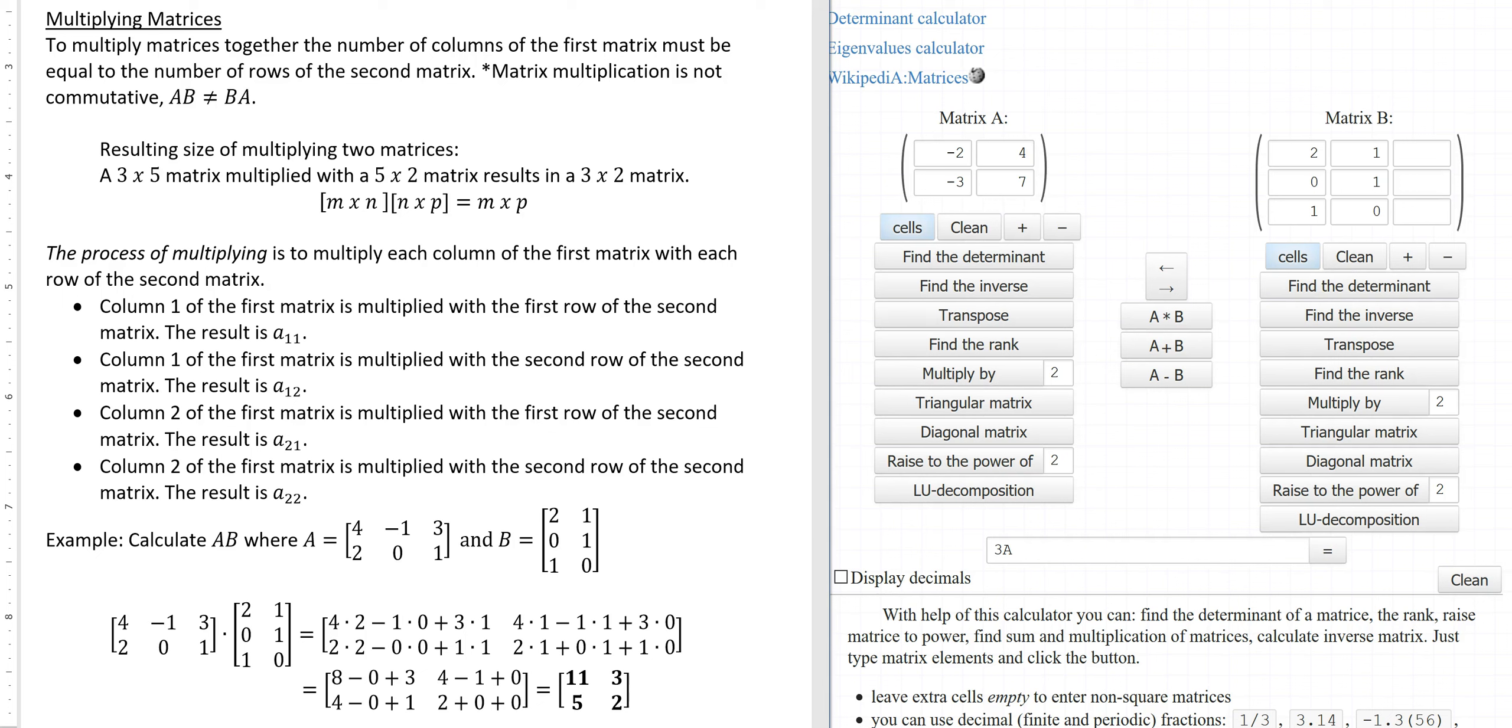When we multiply two matrices together it's nice to know what size we're supposed to end up with. So a resulting size of multiplying two matrices is found with the following. Let's first take the example. A 3 by 5 matrix multiplied with a 5 by 2 matrix will result in a 3 by 2 matrix. And the reason is that you take the number of rows in the first matrix and the number of columns in the second matrix and that tells you the size of the resulting matrix.